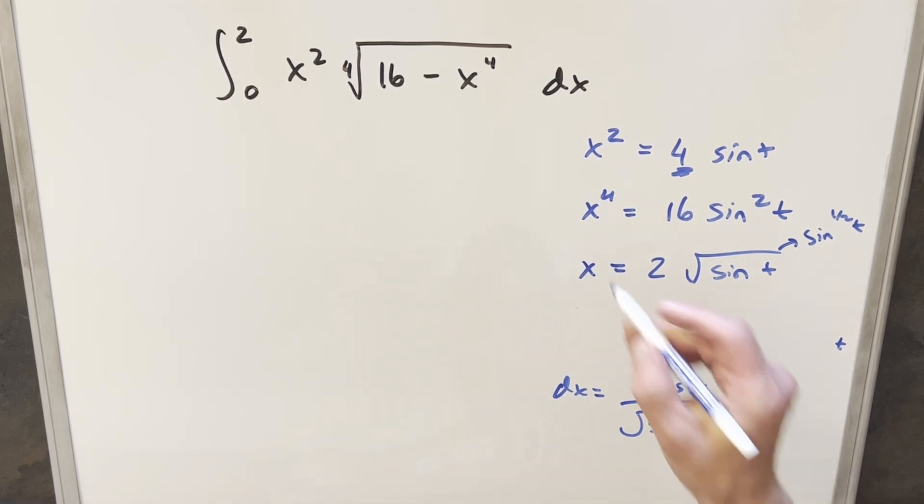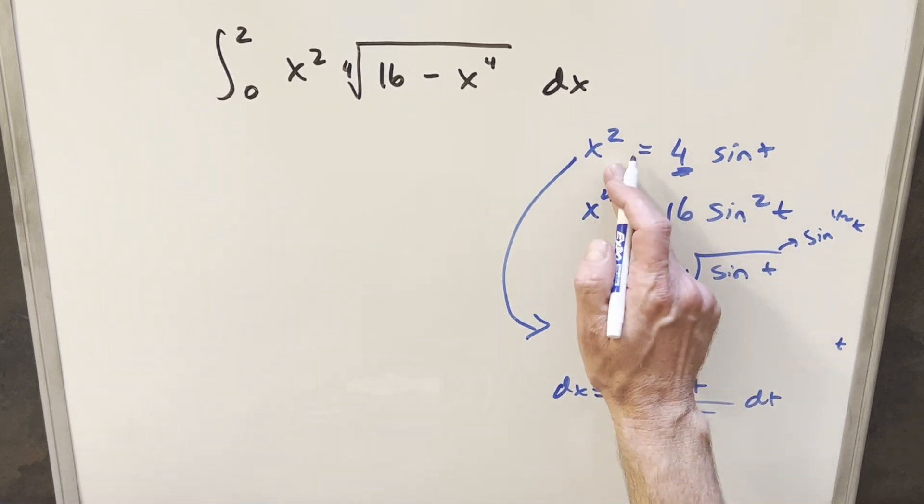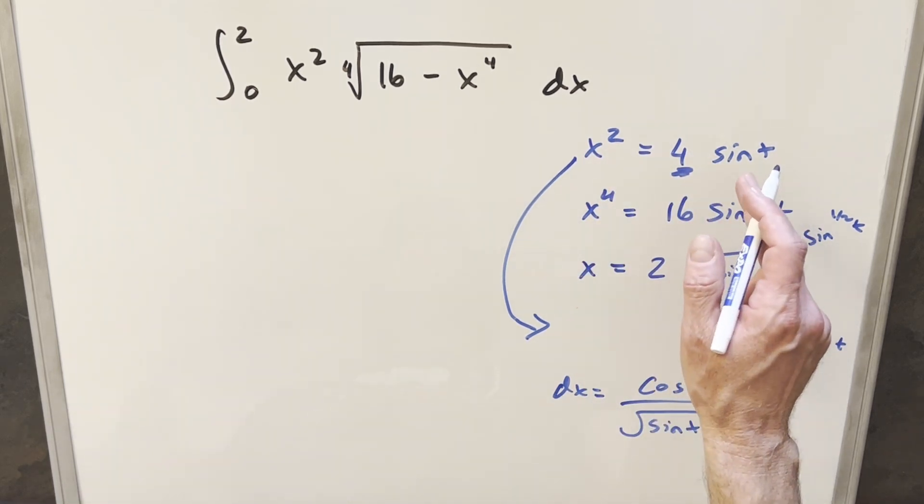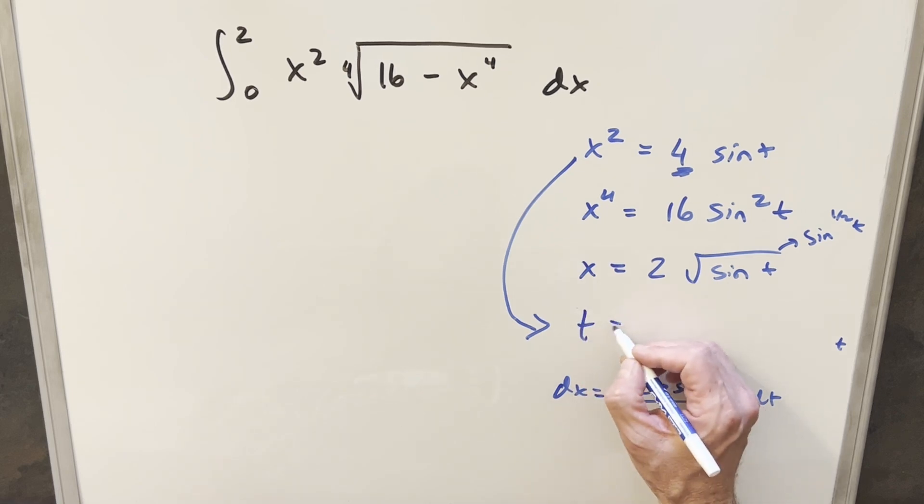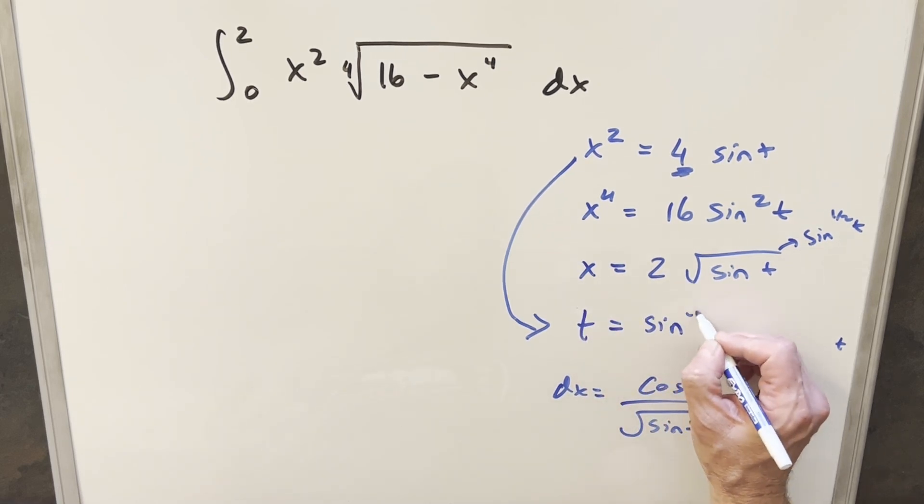Now one other thing, let's just take this value here and isolate our t just to make the substitution easy. So you can divide by 4, you have x squared over 4, take arc sine on both sides, and we end up with t equal to arc sine of x squared over 4.